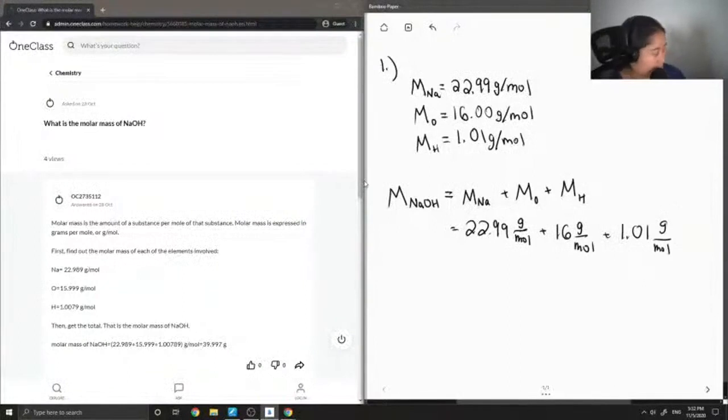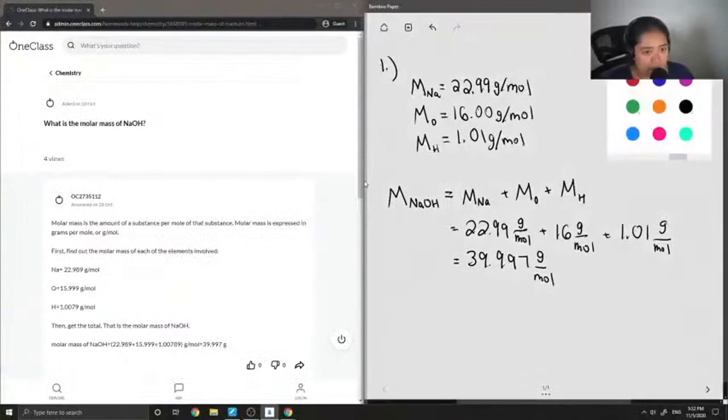Then if you add it all up, the sum of all these values is 39.997 grams per mole. So this is the molar mass of sodium hydroxide.